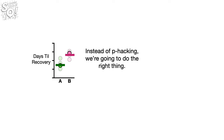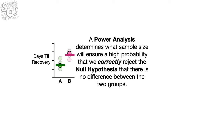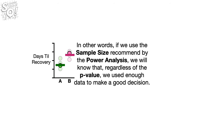Instead of p-hacking, we're going to do the right thing. We're going to do a power analysis to determine the sample size for the next time we do this experiment. A power analysis determines what sample size will ensure a high probability that we will correctly reject the null hypothesis that there is no difference between the two groups. In other words, if we use the sample size recommended by the power analysis, we will know that, regardless of the p-value, we used enough data to make a good decision.